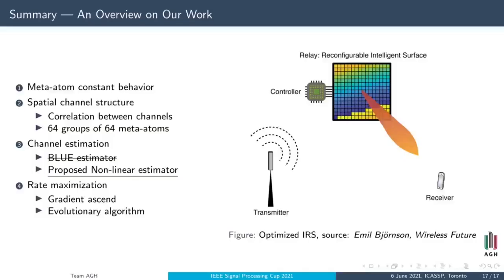In conclusion, we started by confirming the same behavior for each meta-atom state. Moving on, we identified correlation between channels. We have 64 groups of 64 meta-atoms. Then, we created two estimators. One of them was clearly better. Using this non-linear estimator, we designed two optimization methods: gradient ascent and evolutionary algorithm.